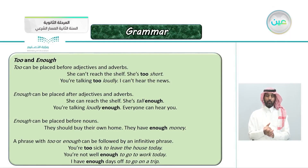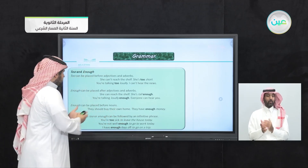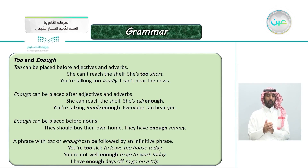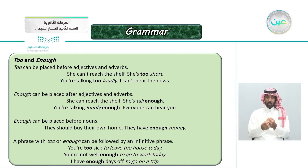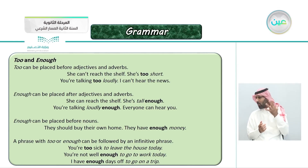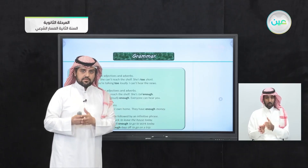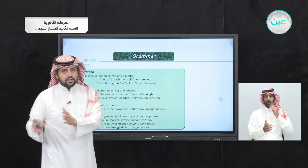Moving on to the next part of today's lesson: 'too' and 'enough.' We know the meaning of 'too' — extremely — and 'enough.' 'Too' can be placed before adjectives and adverbs. For example: 'She can't reach the shelf. She's too short.' Or: 'You're talking too loudly. I can't hear the news.' So 'too' comes before an adjective or adverb. 'Enough' is placed after adjectives and adverbs.